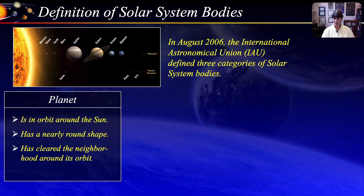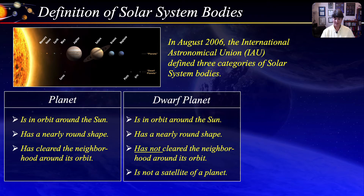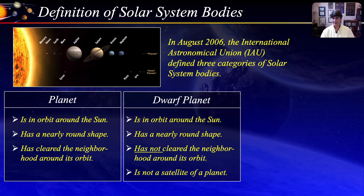The eight planets are Mercury, Venus, Earth, Mars, Jupiter, Saturn, Uranus, and Neptune. A dwarf planet is a celestial body that, like a planet, is in orbit around the sun and has sufficient mass for its self-gravity to overcome rigid body forces so that it assumes a nearly round shape. However, it has not cleared the neighborhood around its orbit — in other words, it is not the gravitationally dominant body in its orbit. By definition, this is the difference between a planet and a dwarf planet. And of course, it is not a satellite of a planet.